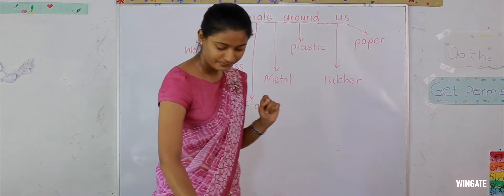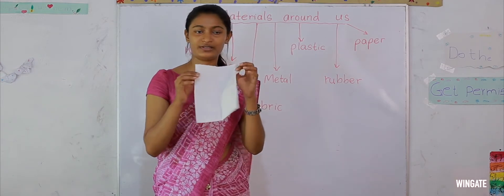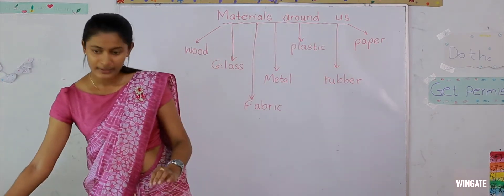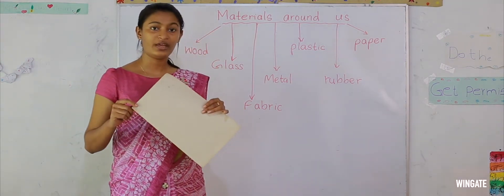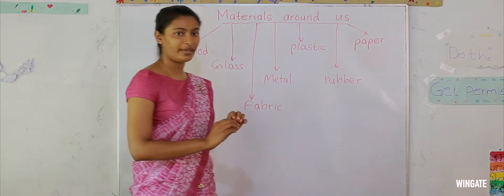Paper. Tissue papers. These tissue papers are made of paper. And also the papers that you use in your everyday life, and the writing books that you write your notes in. They all are made of paper.